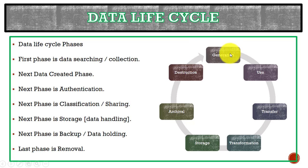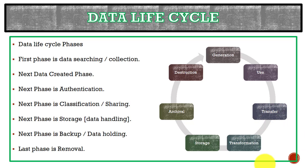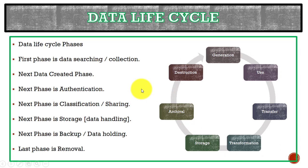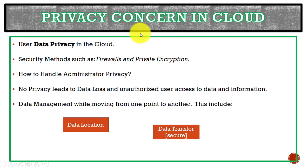So this is the life cycle of data from generation to destruction: first we search for and collect data, then we use or create data, then we can share data with other persons on the cloud — that is the transfer of data over the internet. After that we have storage, backup, and destruction. That is the simple data life cycle on the cloud.